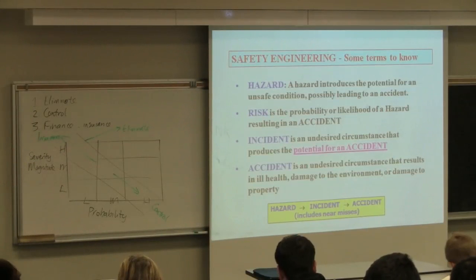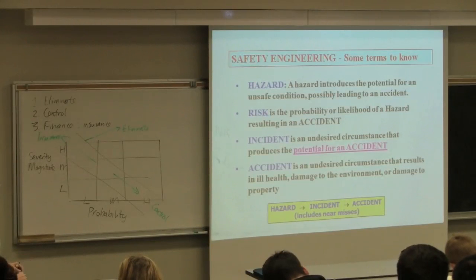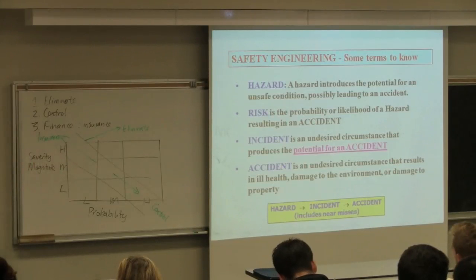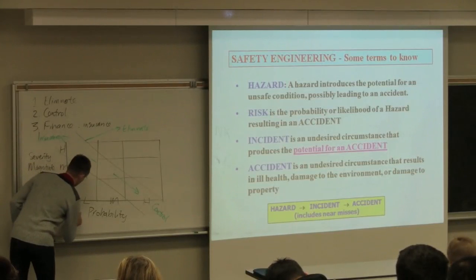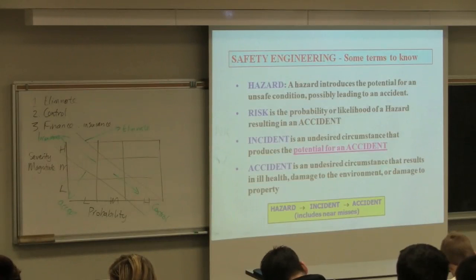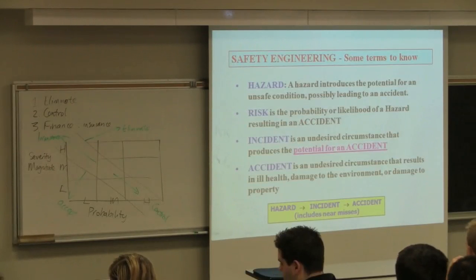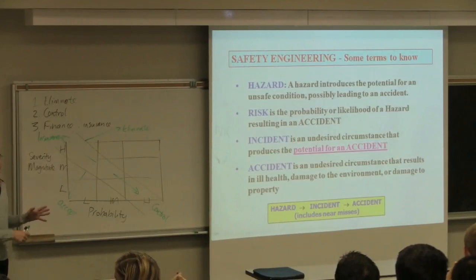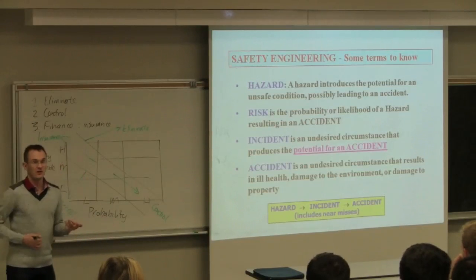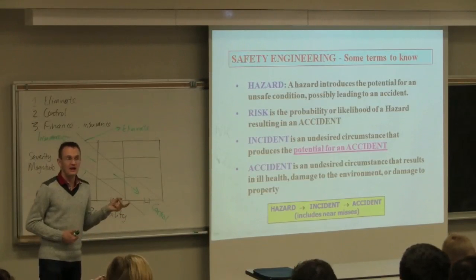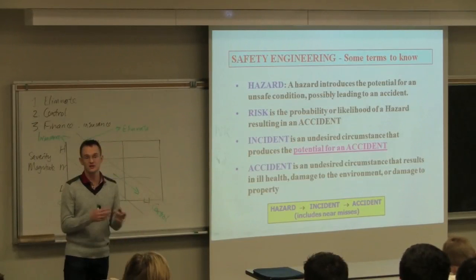So what we tend to find, though, is that when we've got high risk and high probability, anywhere sort of in this region over here, we'll tend to eliminate that risk when possible. We really don't want these high probability and high severity events from occurring. In this middle region, we'll tend to control the risk. At the low end, you control it. At this end, you finance to buy insurance for it.